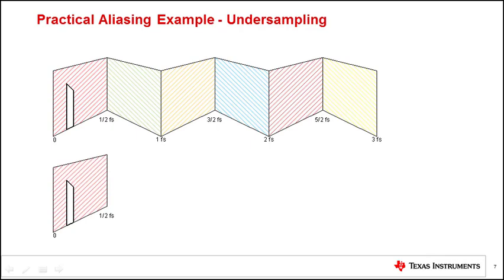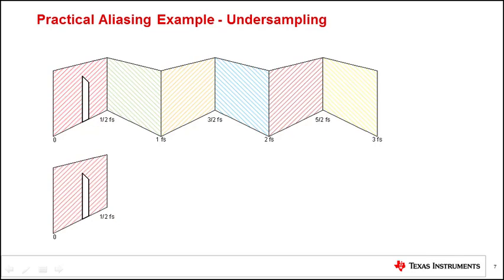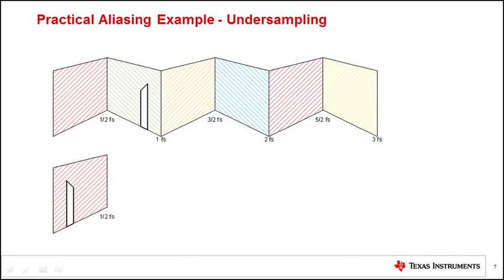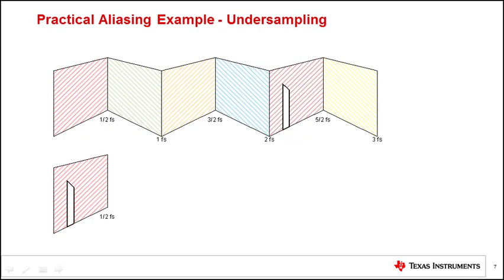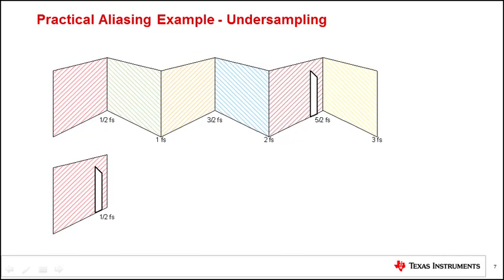To better understand aliasing and frequency folding, a signal is swept with increasing frequency through different Nyquist zones and resulting spectrum after aliasing and folding is observed as it would appear in the first Nyquist zone. It can be observed when signal's frequency is increased in odd Nyquist zones, the signal seems to move from 0 to fs over 2. But as we increase frequency of signal in even Nyquist zones, the alias signal moves backward from fs over 2 to 0.